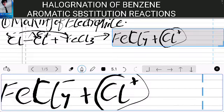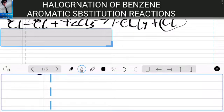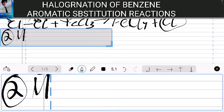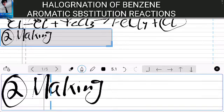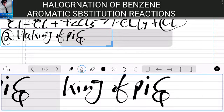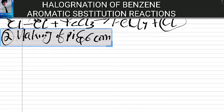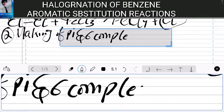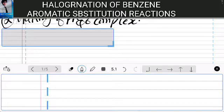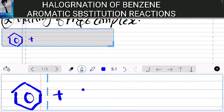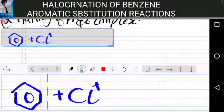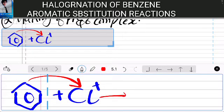So the first step is the reaction between chlorine and FeCl3 to form the electrophile. The second step of our aromatic substitution reactions is making of pi and sigma complex. In this step, our benzene ring acts as a nucleophile and attacks on our electrophile, which is chlorine here, and forms a pi complex.